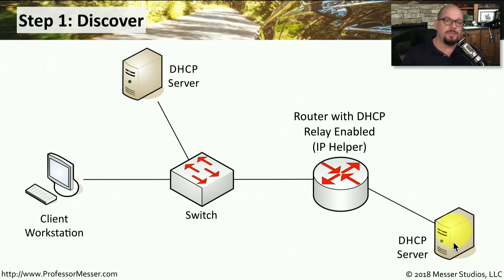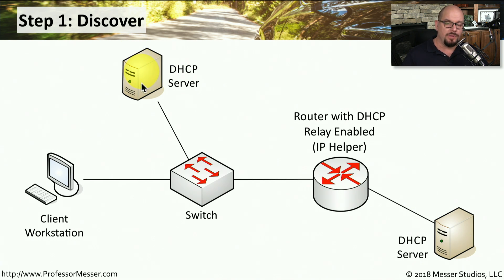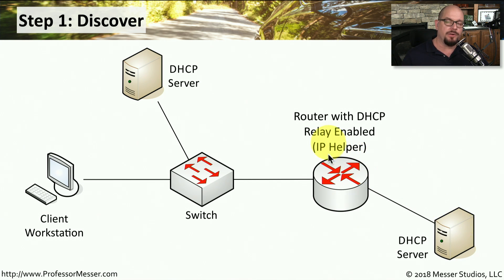This means we're now ready for any problems that might occur. If our local DHCP server has a power supply that goes bad and is suddenly unavailable, we can still use the DHCP server that's located elsewhere because we've configured a DHCP relay.